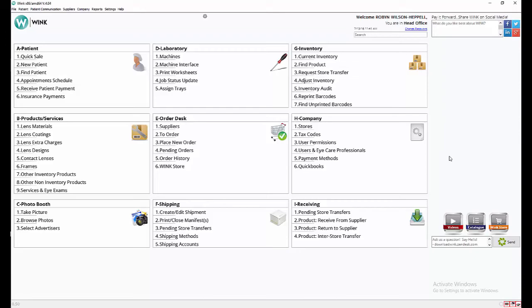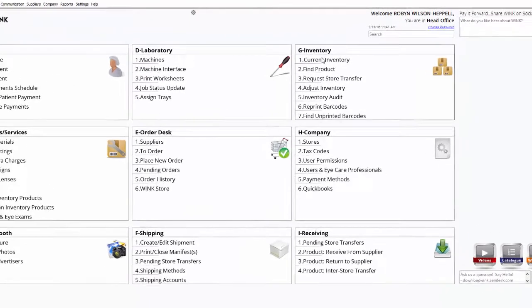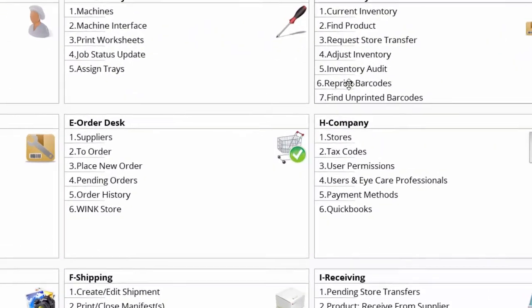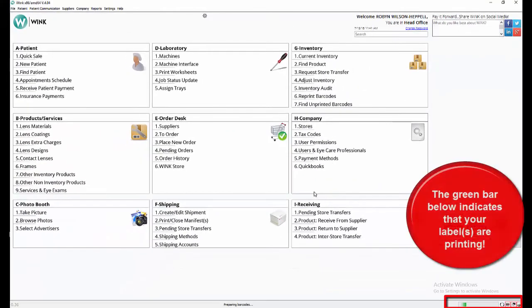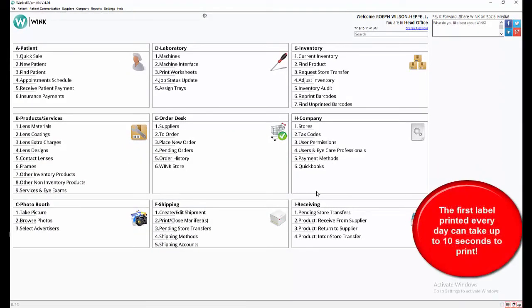First, go back to your Wink interface, then click on G6 Reprint Barcodes. Next, type the serial number of the label you wish to reprint in this field and press Enter. Then click on Print. And there you have it! Your new label has printed out and the old label has been deactivated.